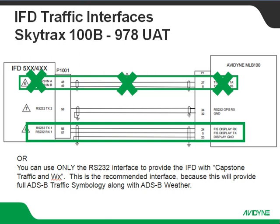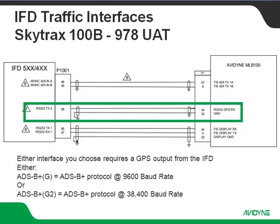So you don't need to run four wires — you just need the two for that part of the interface. However, there is a third line that does have to be run: the Skytrax 100B absolutely requires a GPS input. We're going to wire up a separate RS-232 to provide ADSB+G at 9600 baud, or ADSB+G2 at 38,400 baud. It doesn't matter which one you use, as long as the config settings match on both ends — those baud rates have to match.